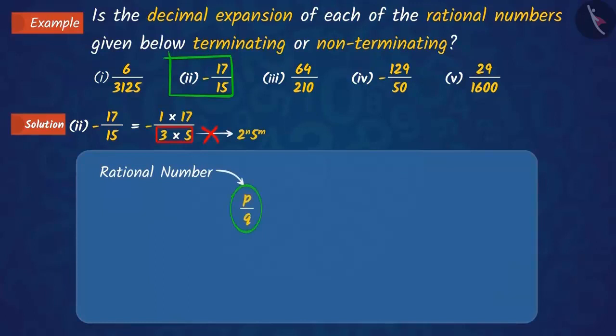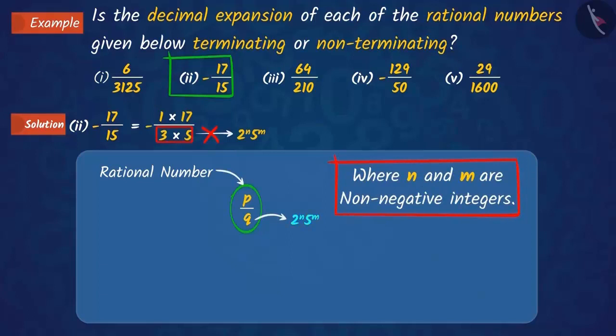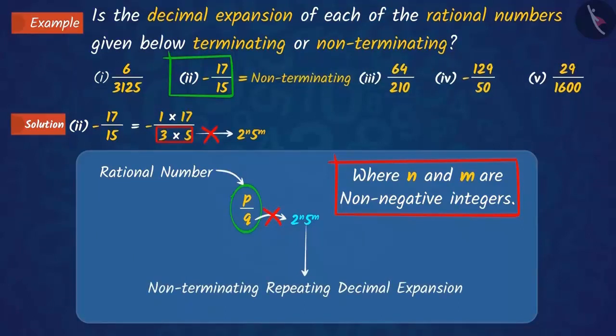You will remember that in a rational number p upon q, if q is not in the form of 2 raised to n into 5 raised to m, then the decimal expansion of the number is non-terminating.